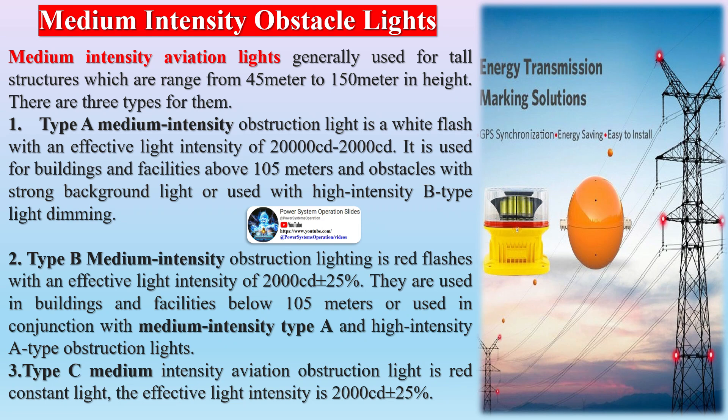Regarding the classification of aviation beacon lights: low-intensity obstruction lighting, also called the L810 obstruction light, is mainly used for tall structures shorter than 45 meters.